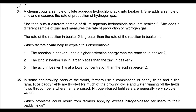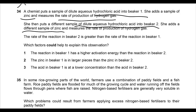Question 34: a chemist puts dilute aqueous hydrochloric acid into beaker one and adds a sample of zinc, then measures the rate of hydrogen gas production. She then puts a different sample of hydrochloric acid into beaker two with a different sample of zinc, and again measures the rate of hydrogen production. The rate of reaction in beaker two is greater than in beaker one. Which factors could explain this observation?